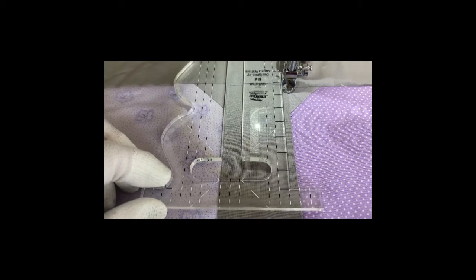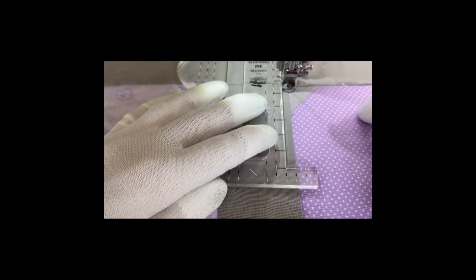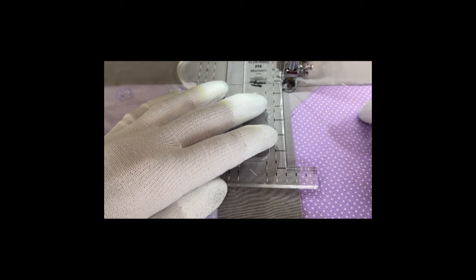I started out using this ruler, it's Sid by Angela Walters, and it has these little hooks on the end of it right here. If you notice, this foot is circular all the way around so that the ruler can butt up against it, and the needle is a quarter of an inch inside the circle.